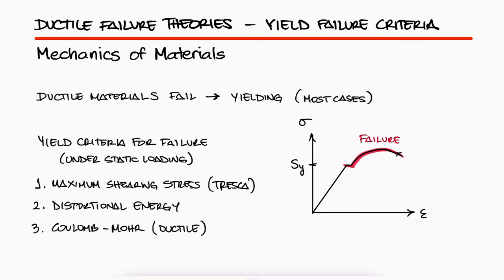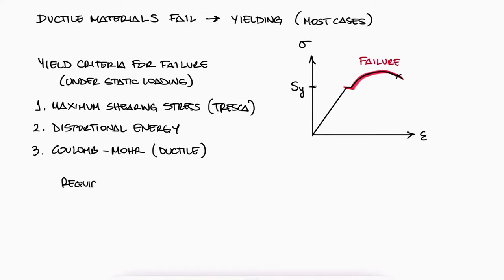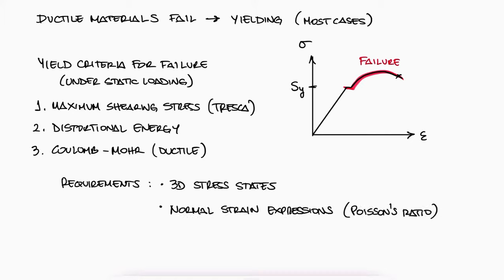For some of these criteria, we'll use two additional concepts: the three-dimensional state of stress and the expressions for normal strains using Poisson's ratio.